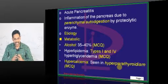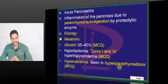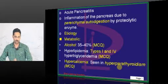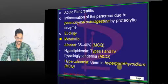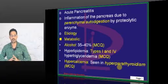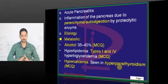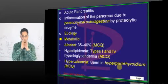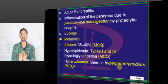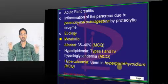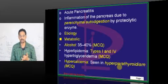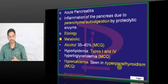This inflammatory cascade turns into SIRS — Systemic Inflammatory Response Syndrome. From the pancreas, the inflammation spreads throughout the body.